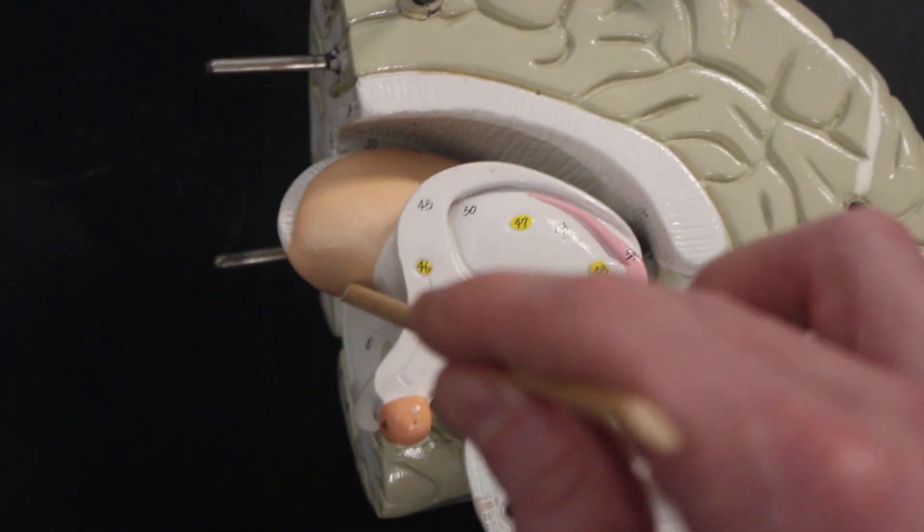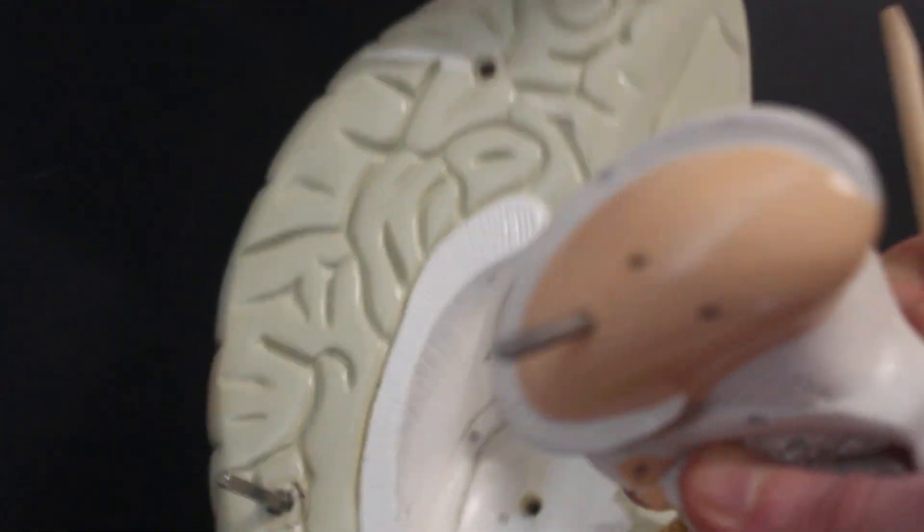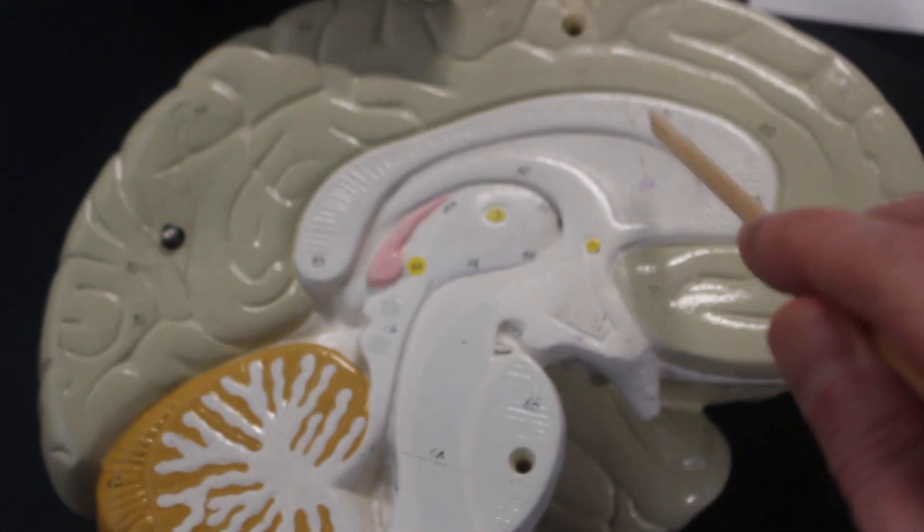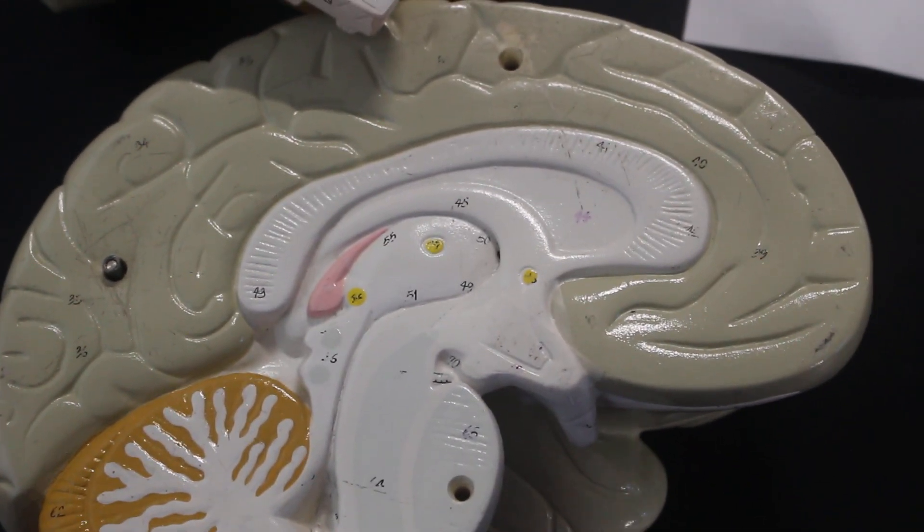It is the caudate nucleus. So this pinkish structure here, that is the caudate nucleus. The space surrounding it, that is the lateral ventricle. Again, the lateral ventricle is behind the septum pellucidum.